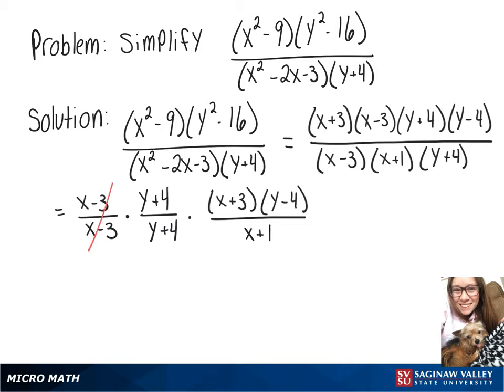Now these will just go away because they're equal to 1, which leaves us with x plus 3 times y minus 4 over x plus 1.